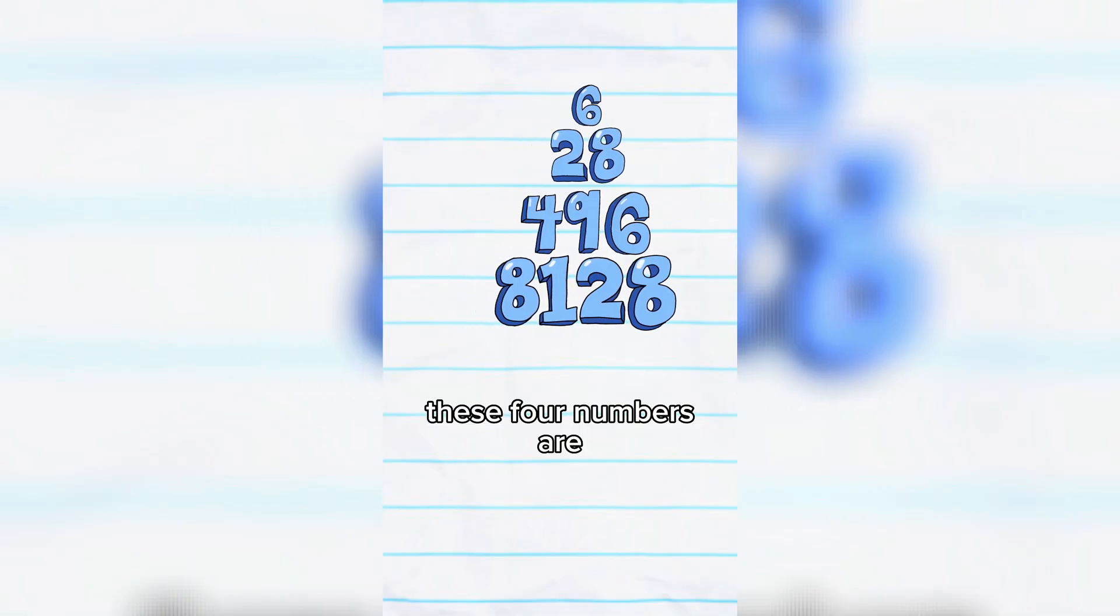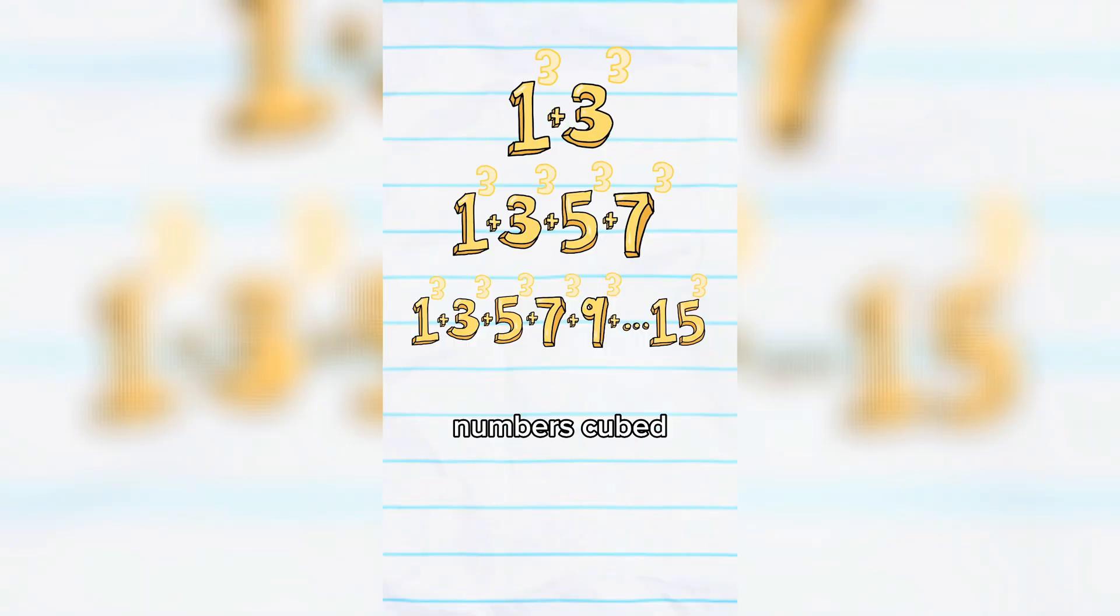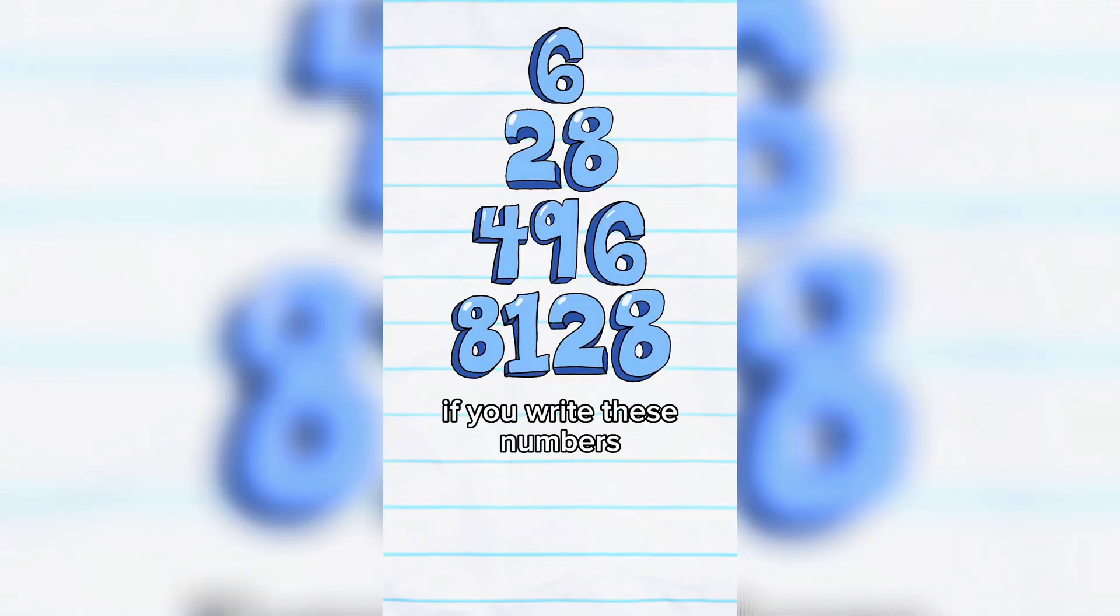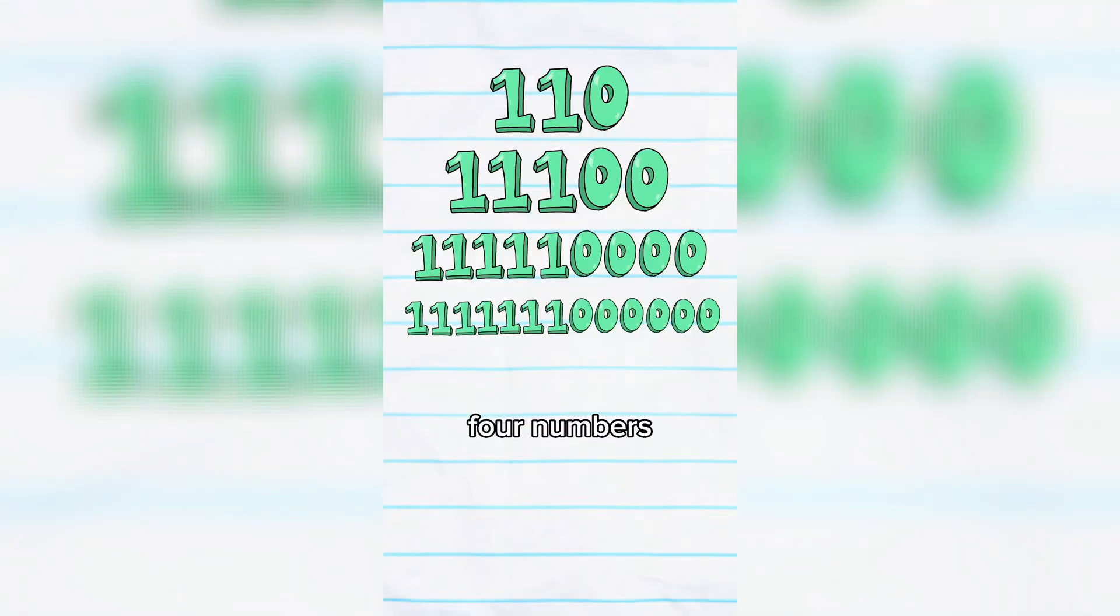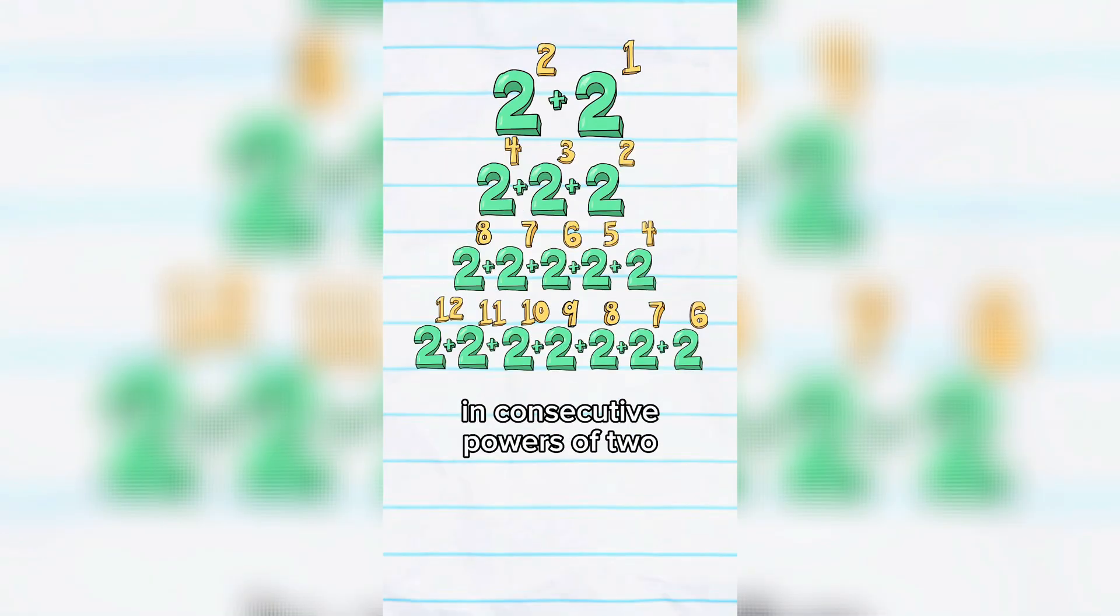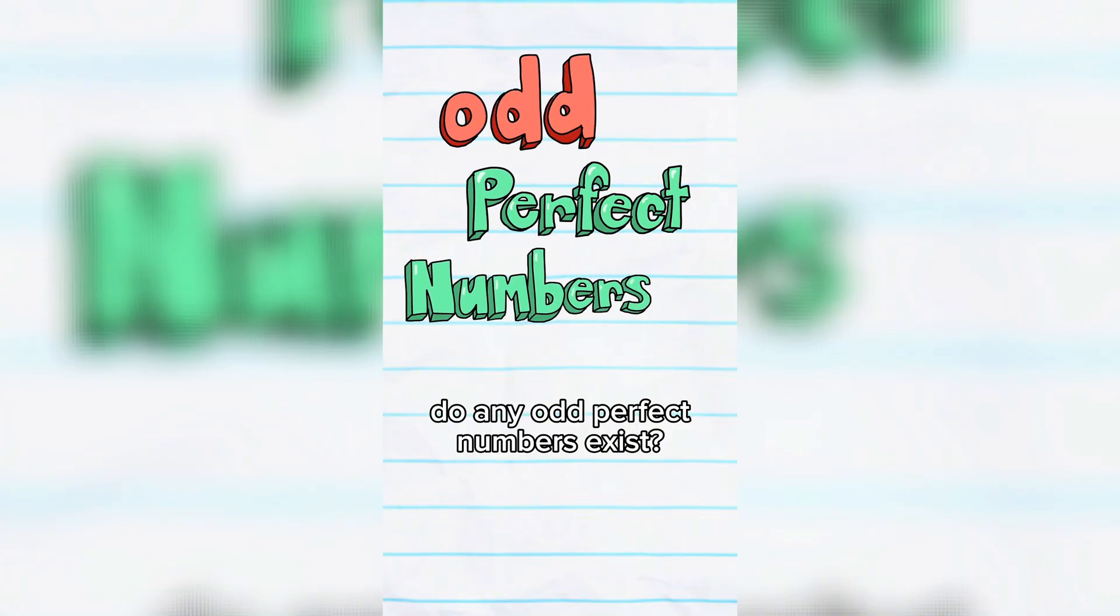It's also why these 4 numbers are called triangular numbers. Now, excluding 6, these numbers can also be written in odd consecutive numbers cubed. But there's more. If you write these numbers in binary, which completely changes the numerical representation, you get these 4 numbers. Cool, but now each of these 4 numbers can also be written in consecutive powers of 2. So this leads to the question, do any odd perfect numbers exist?